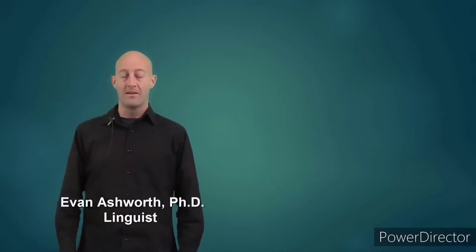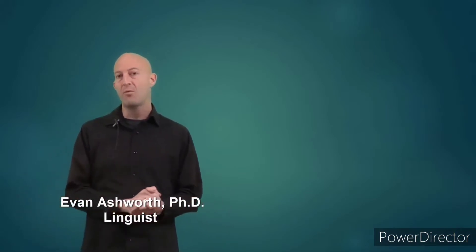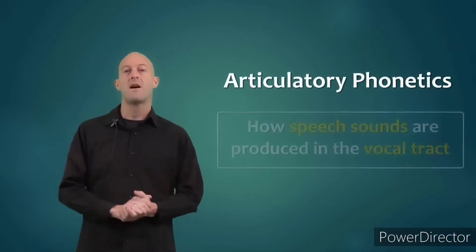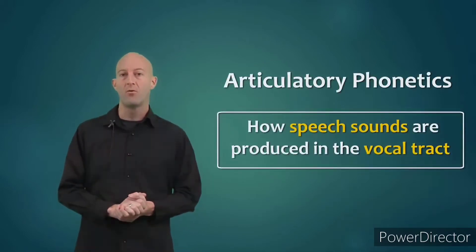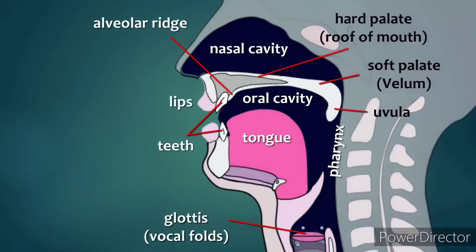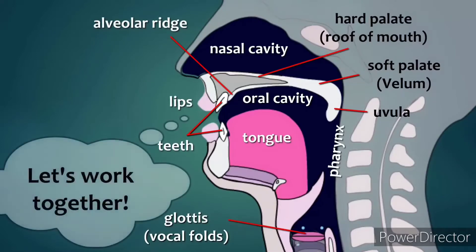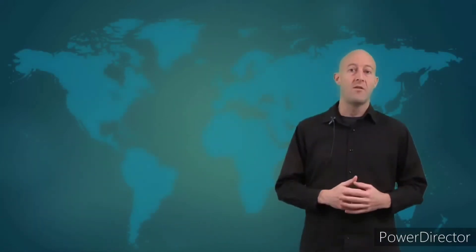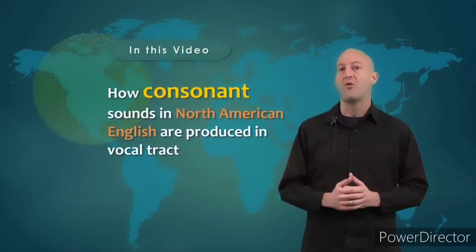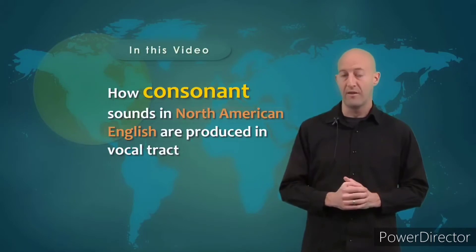Hey everybody, welcome. Thanks for joining us. Today we will be talking about articulatory phonetics. This is the study of how speech sounds are produced in the vocal tract. All of our articulators in our vocal tracts must work in concert to produce just one speech sound. We will be focusing on the phonetics of spoken languages and, more specifically, consonant sounds in North American English in this video.